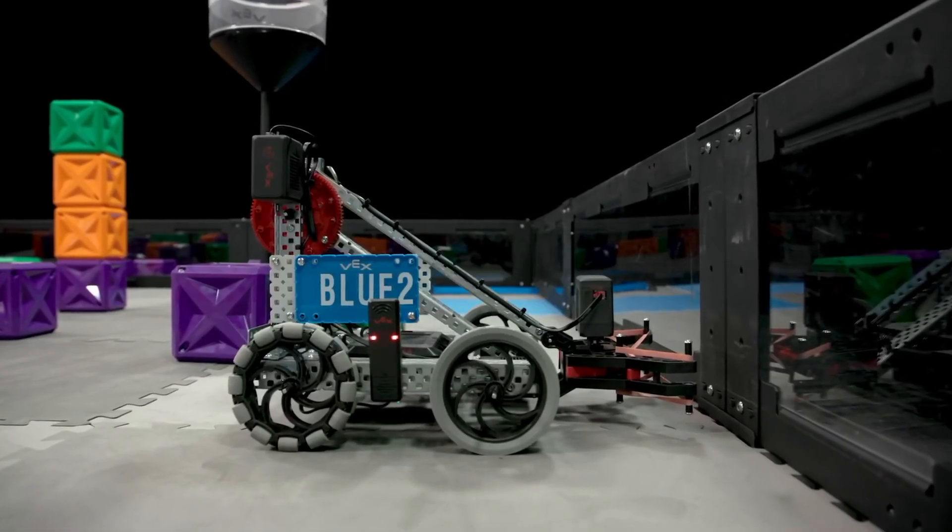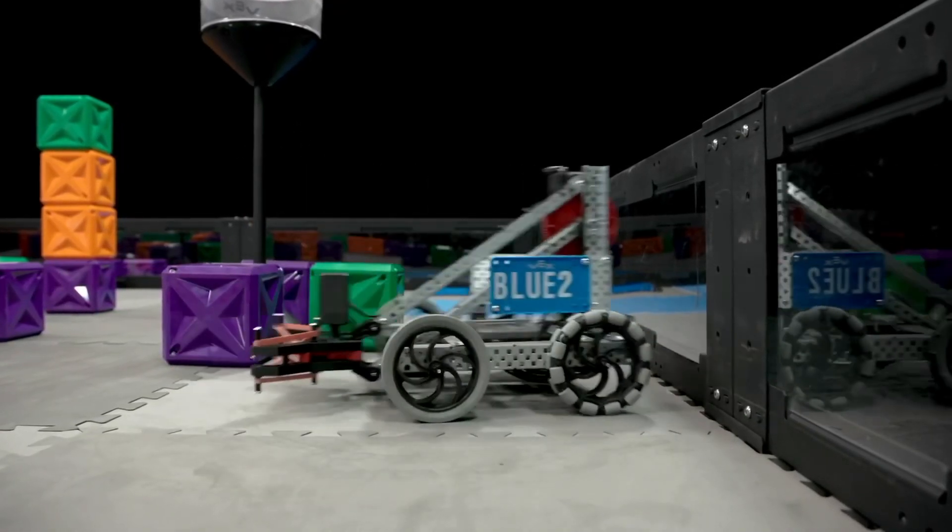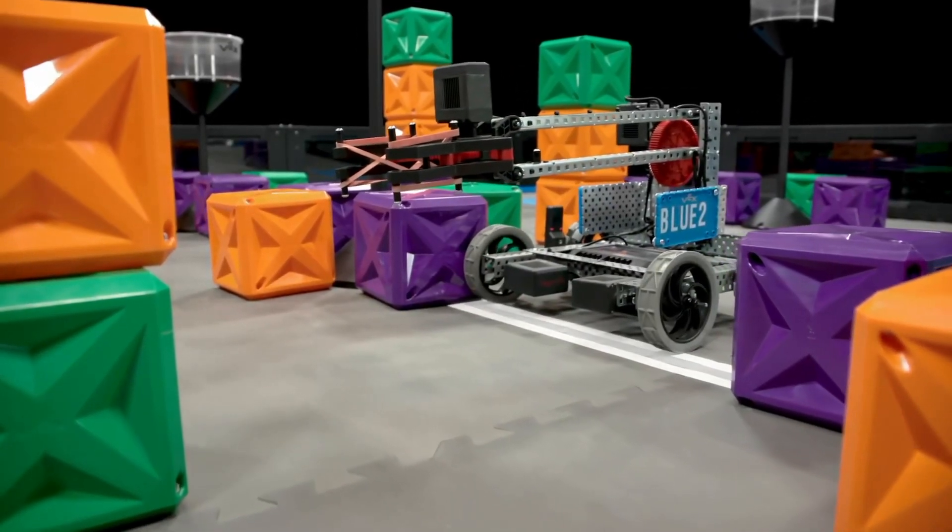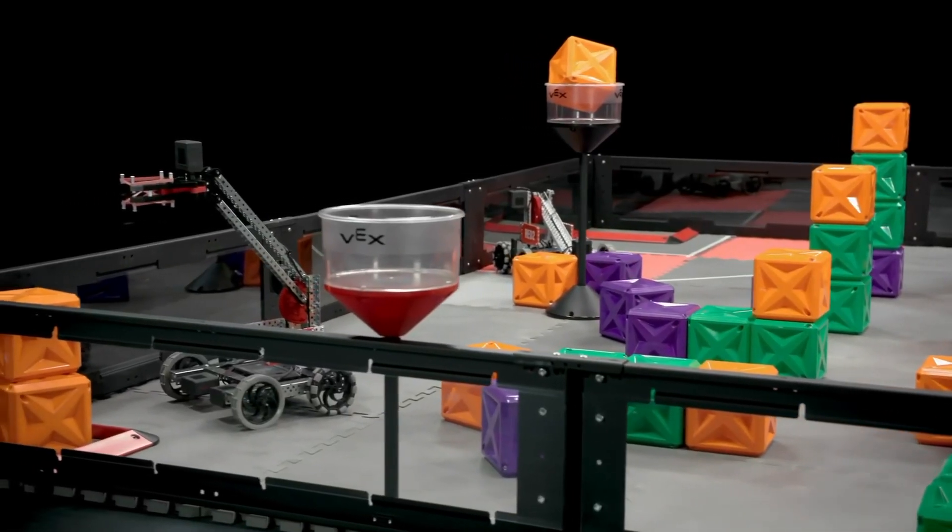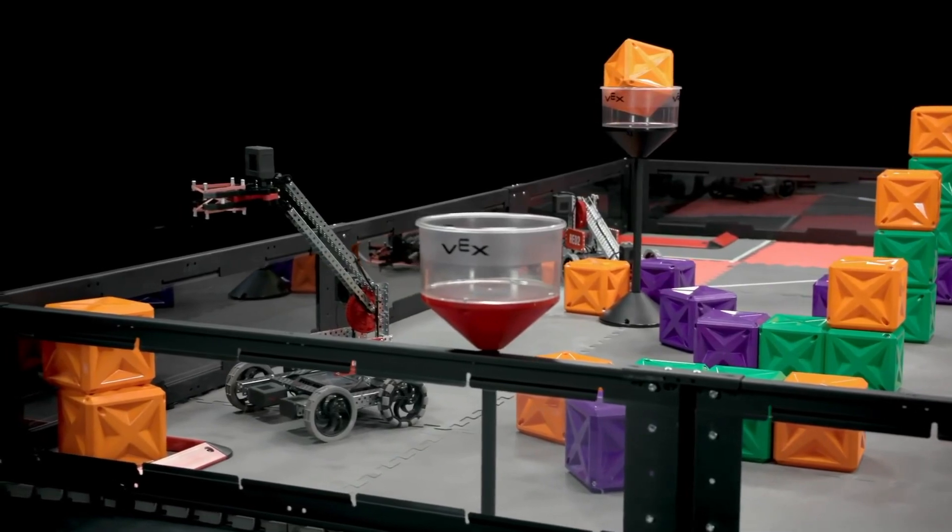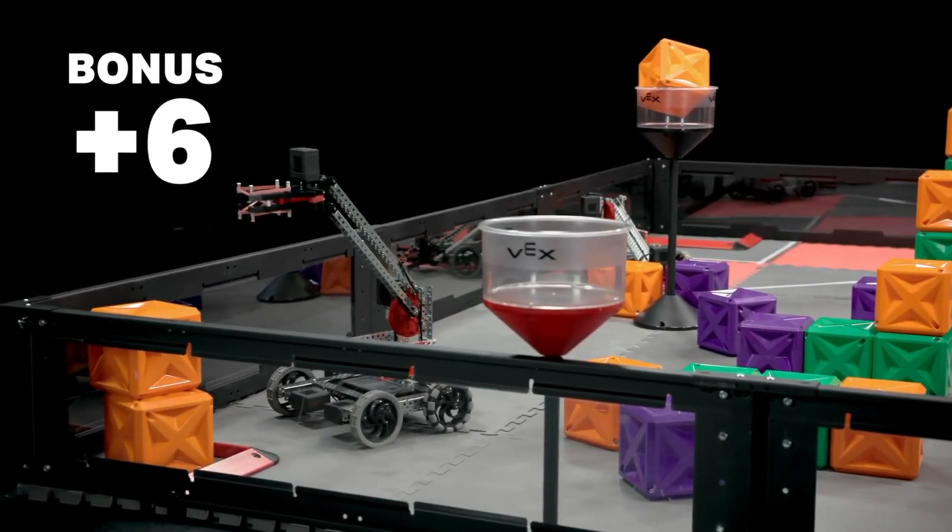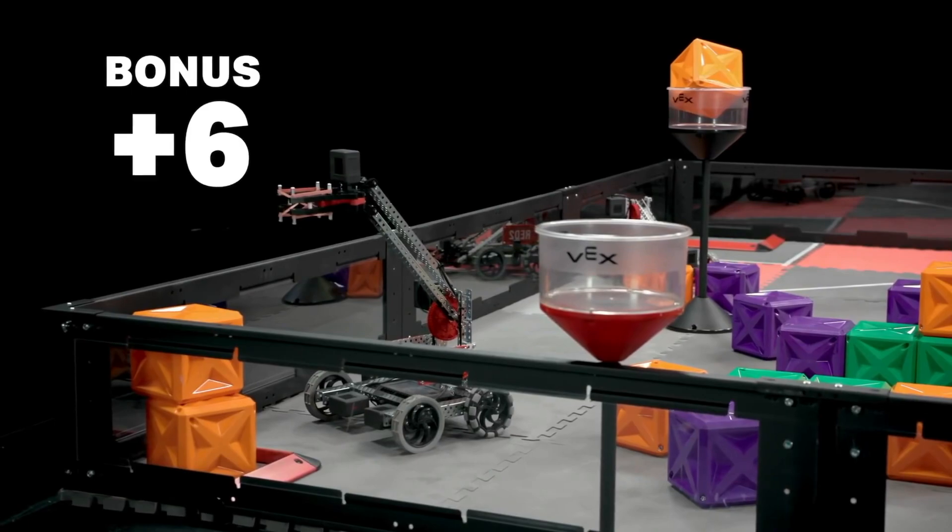Each match begins with a 15-second autonomous period where robots score on their side of the field without help from their drivers. The alliance that scores more points in the autonomous period is awarded with 6 bonus points added to the final score at the end of the match.